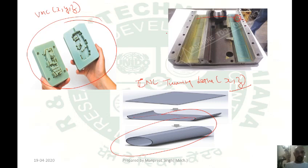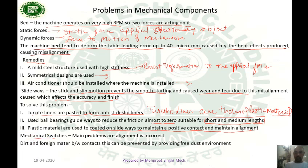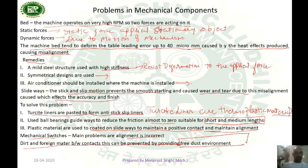Plastic coated material on the slide base maintains positive contact and prevents misalignment. Next are mechanical switches. The main problems are incorrect alignment and dirt or foreign matter between contacts. This can be prevented by installing the machine in a dust-free environment or covering it properly with glass enclosures.